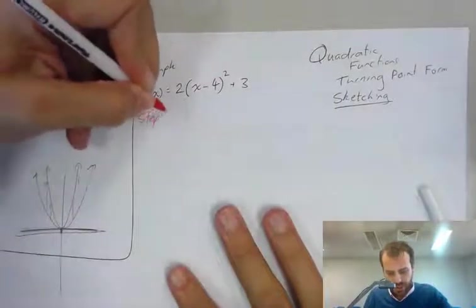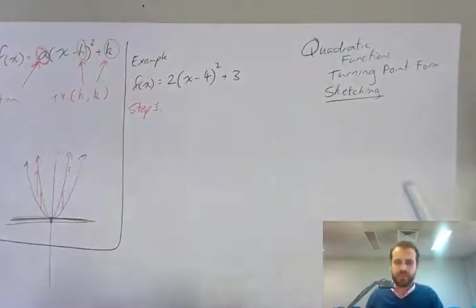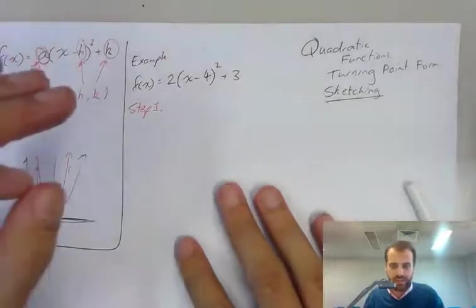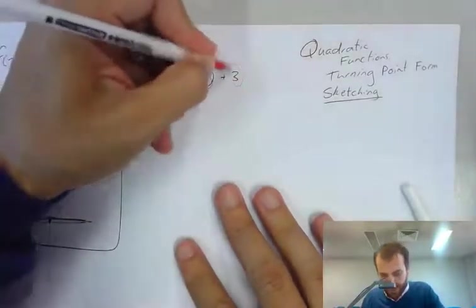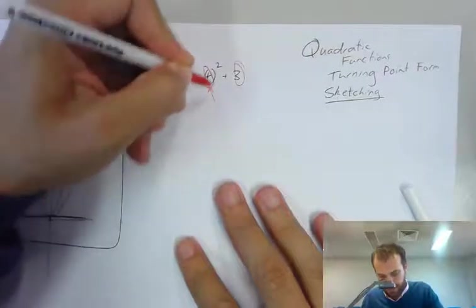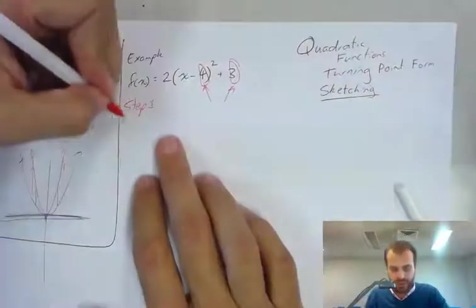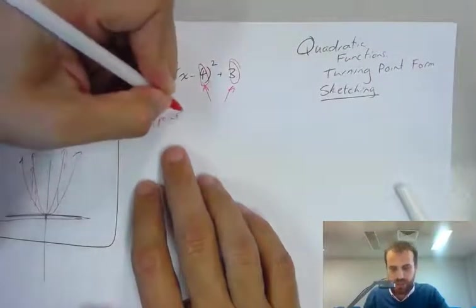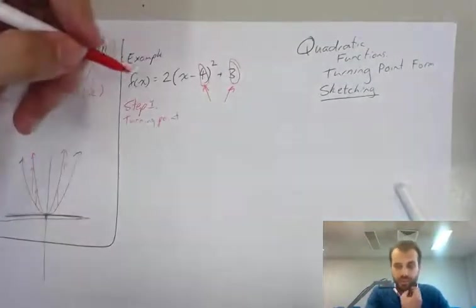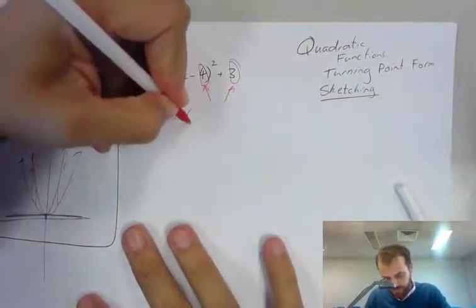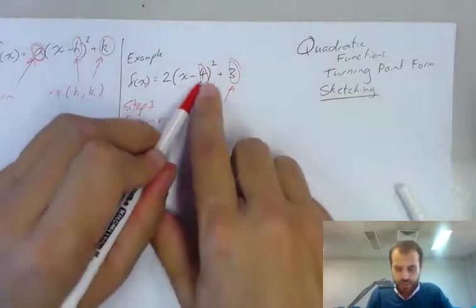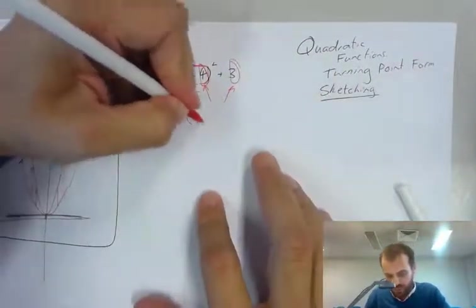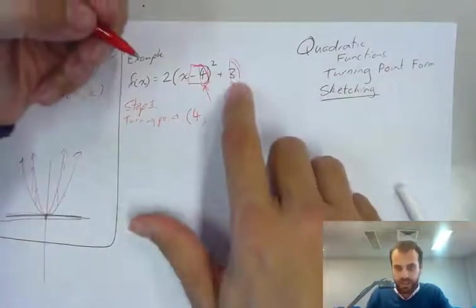So step 1 here. Different people will tell you step 1 is different, but I'm going to jump to what's the easiest thing here: finding the turning point. Here, here. That's my turning point. So step 1 is finding the turning point. And remember that the turning point is the opposite of what you would expect. So because it says minus 4, it's not minus 4, it's 4. But it is 3.